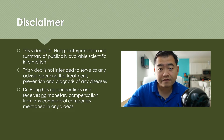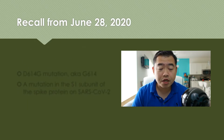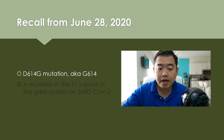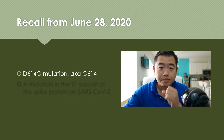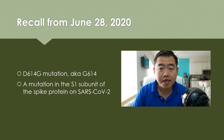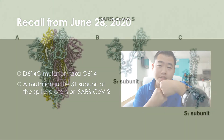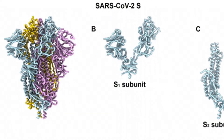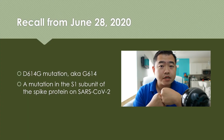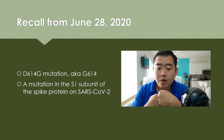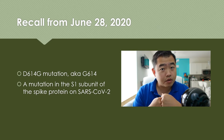Before we dive into the new information on this G614 mutation, let's do a recap of some information presented two weeks ago — the link is above. The D614G mutation, also known as G614, is the current mutation. It is a mutation of a single amino acid in the S1 subunit of the spike protein. The spike protein has two subunits, S1 and S2. S1 is the upper unit, which is responsible for binding to our ACE2 receptor on our cells.